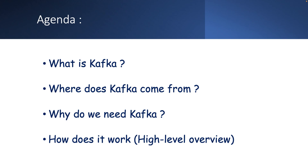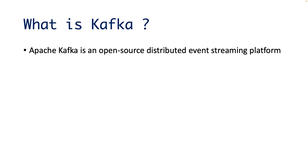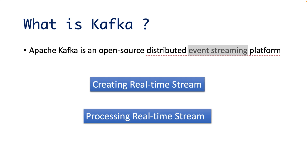Let's start with what is Kafka. If you open the official page of Kafka, you will find this definition: Apache Kafka is an open source distributed event streaming platform. Let's break down these words to understand in a better way. When I say event streaming, it points to two different tasks: create a real time stream, and process the real time stream.